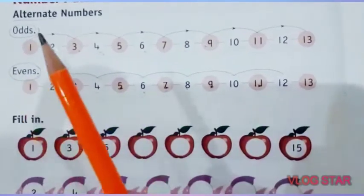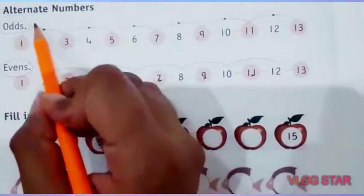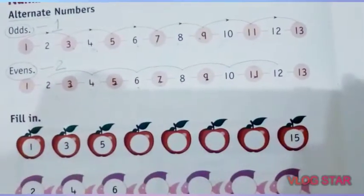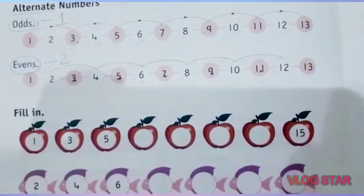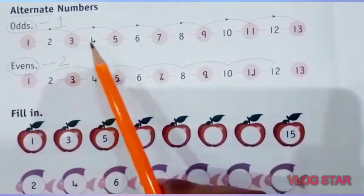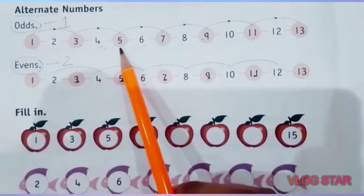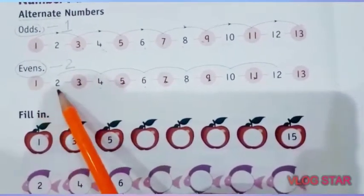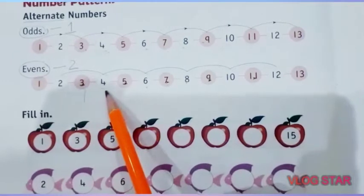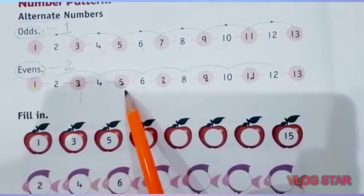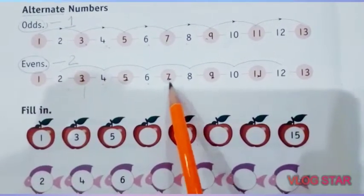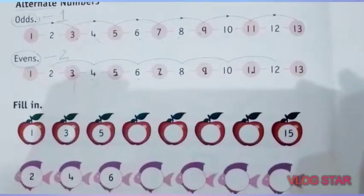I hope آپ کو پتہ چل گیا ہے کہ odd numbers کونسے ہیں اور even numbers کونسے ہیں۔ Odd numbers آپ 1 سے شروع کروگے، even numbers کو آپ 2 سے شروع کروگے، پھر ایک ایک number کو چھوڑتے جانا ہے۔ 1 سے شروع کر کے آپ نے 2 کو چھوڑا، آپ کو 3 ملا — 3 is an odd number. Similarly even numbers میں 2 سے شروع کیا، پھر 3 کو چھوڑ دیا، 4 ملا جو even number ہے، 5 کو skip کیا، 6 even number، 7 کو skip کیا، 8 even number۔ This is how we get odd and even numbers.